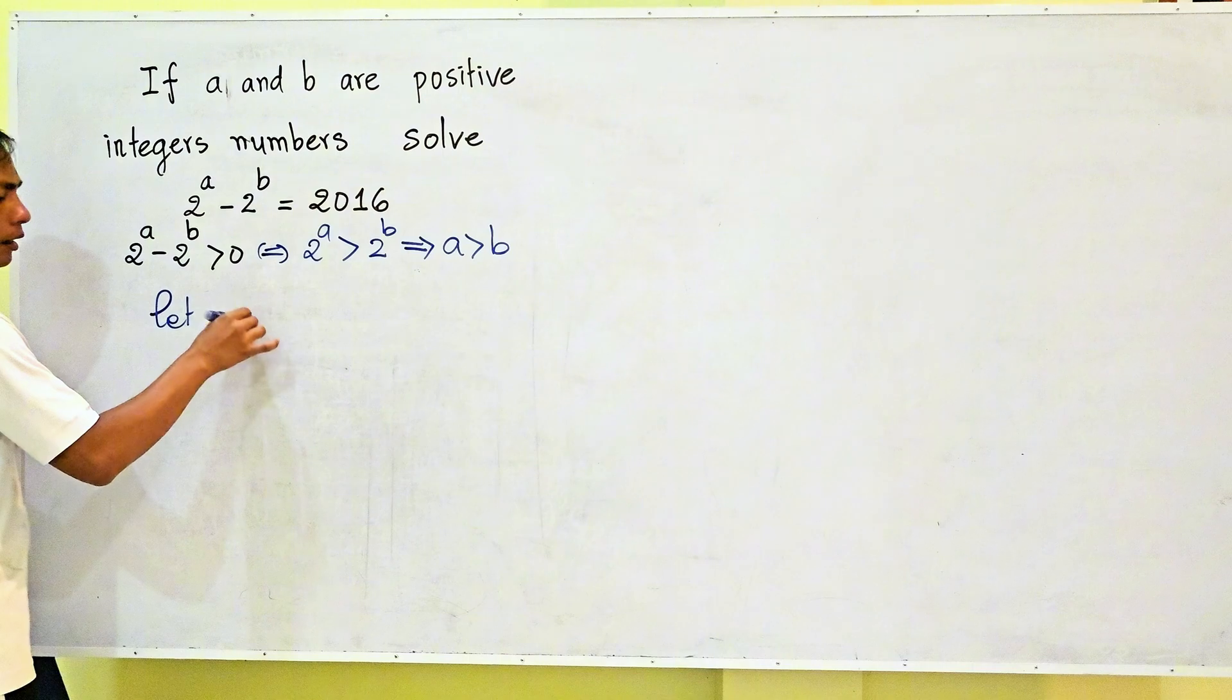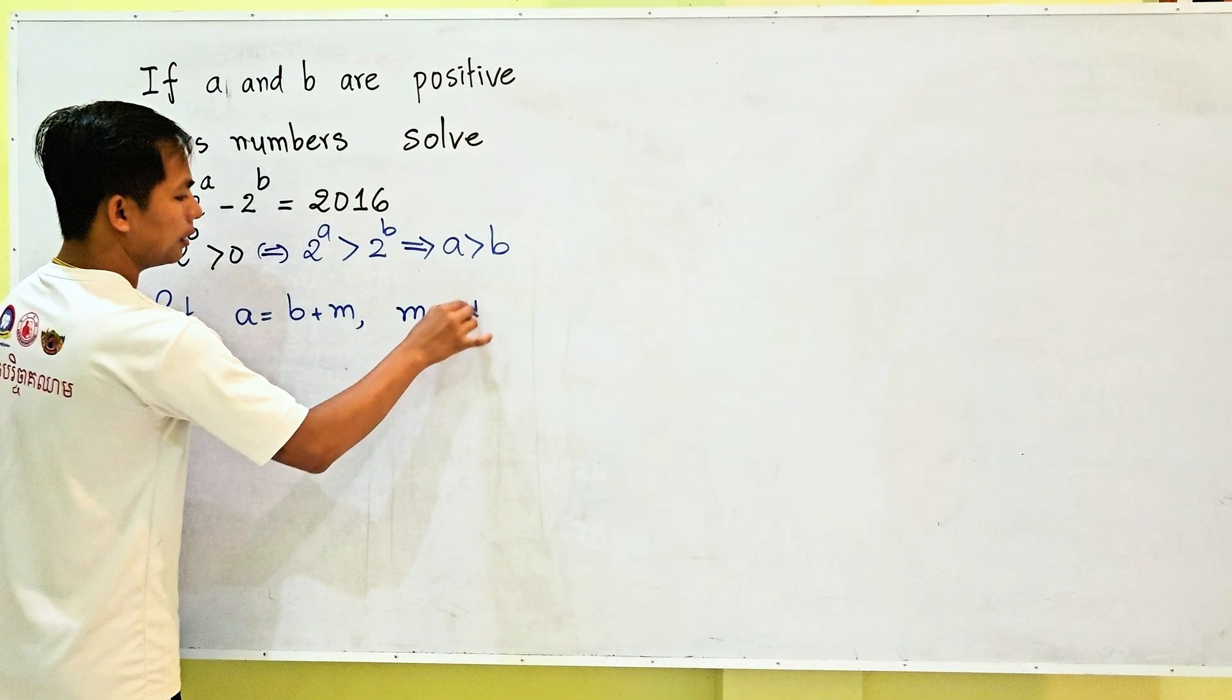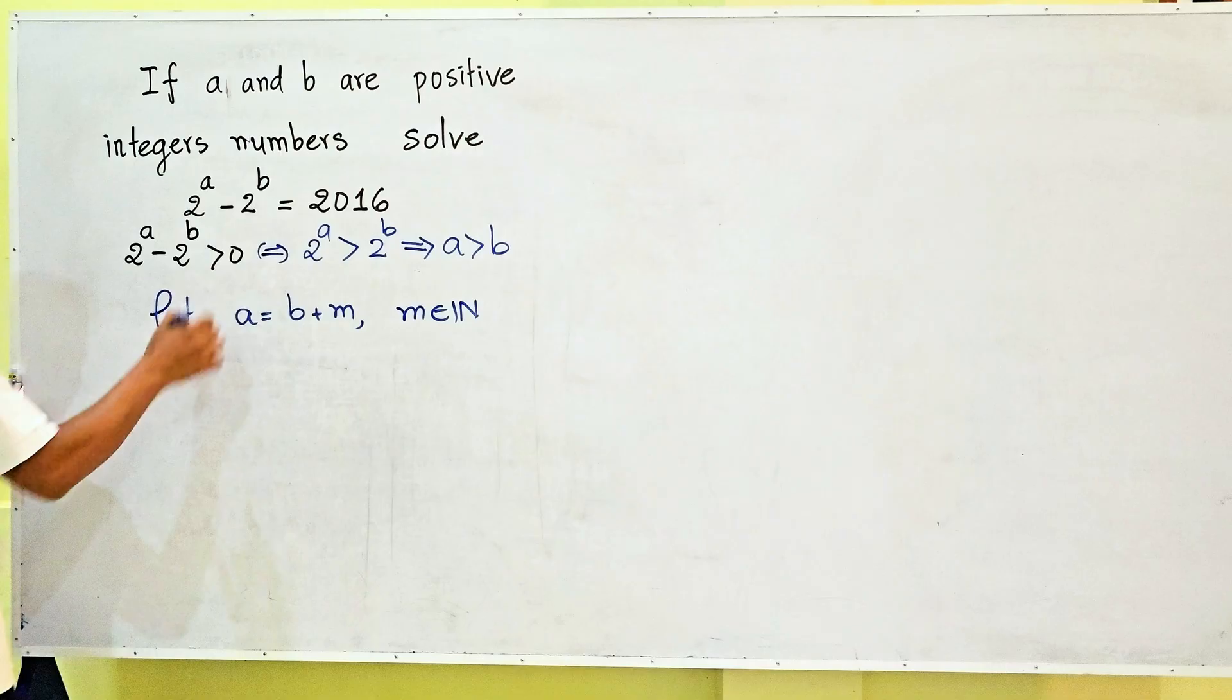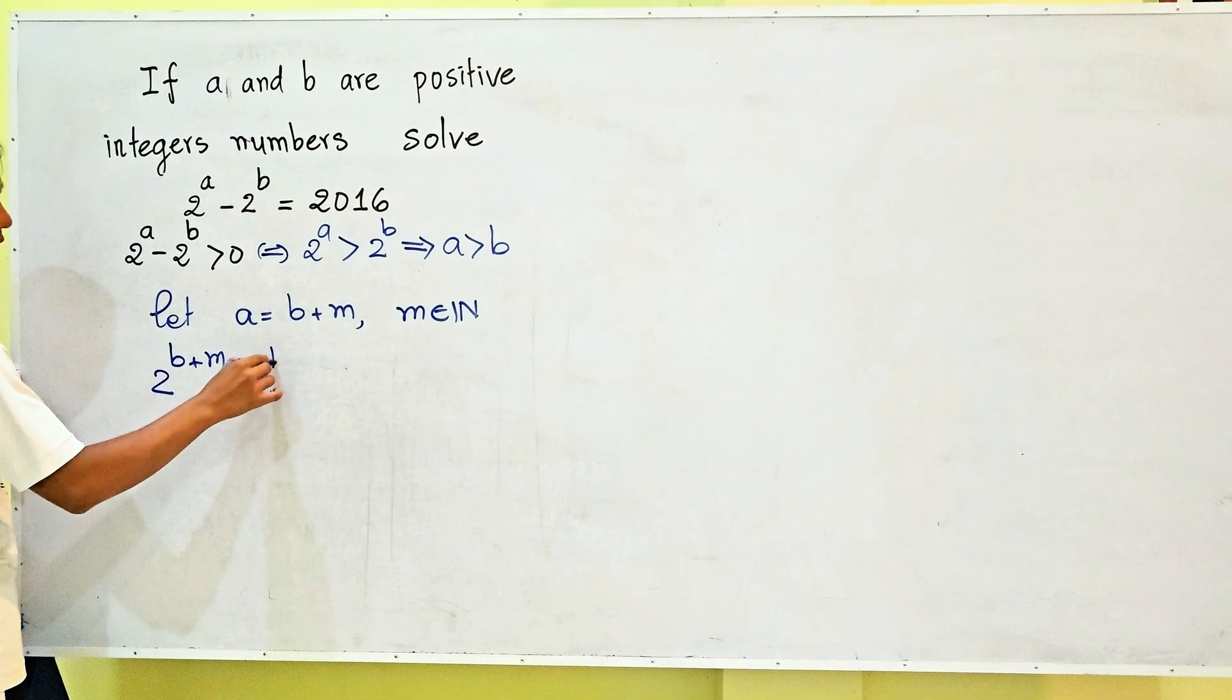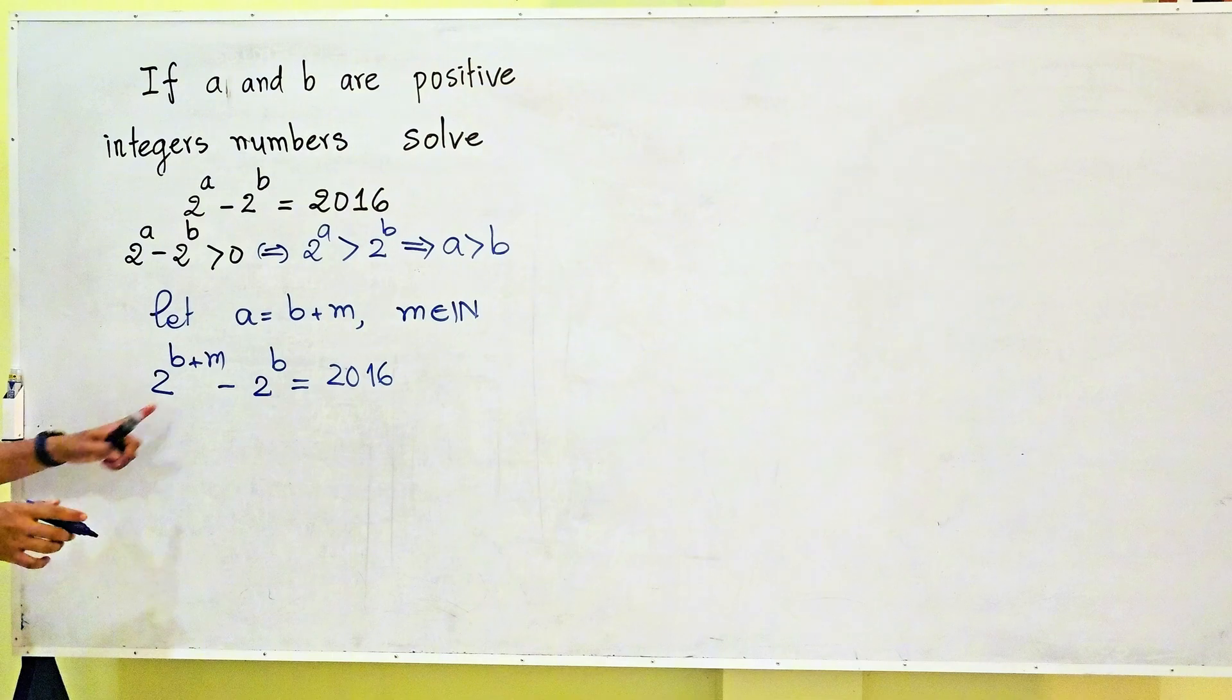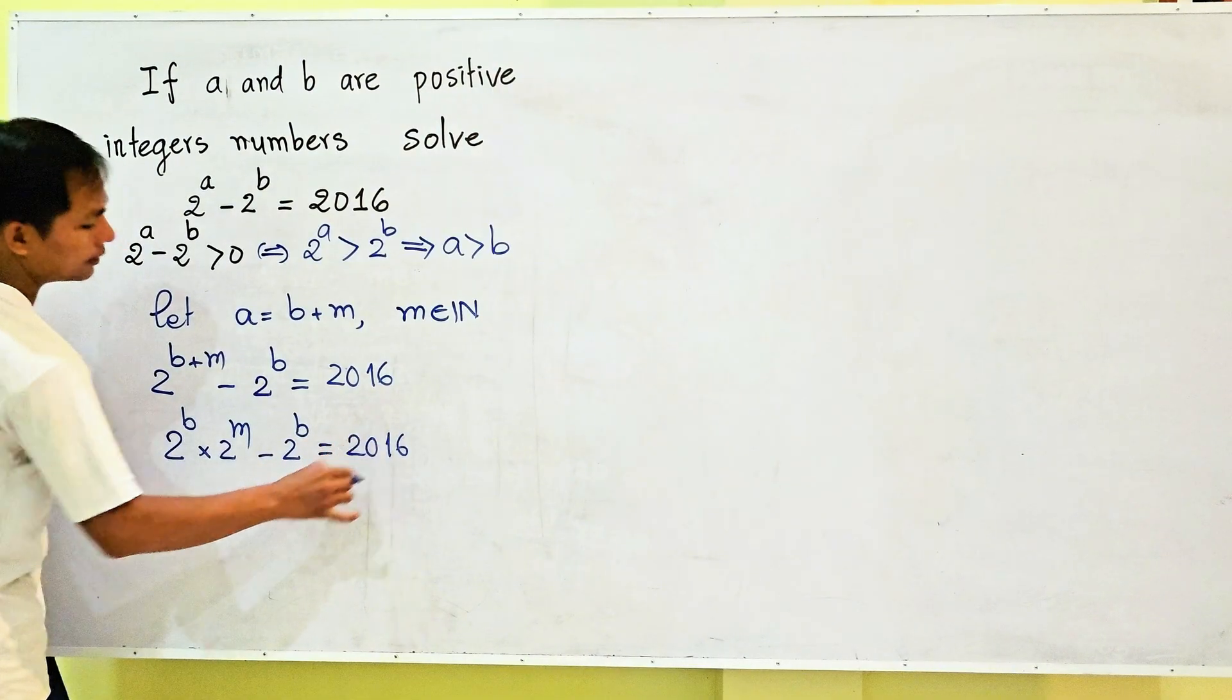Let a = b + m, where m must be a natural number. So we get 2^(b+m) - 2^b = 2016. We can write this as 2^b × 2^m - 2^b = 2016.